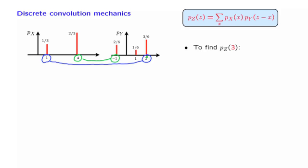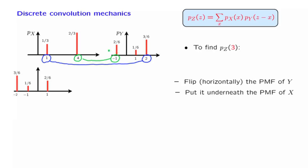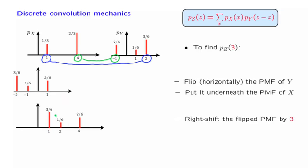So an alternative way of arranging the calculation is the following. Let us take the PMF of y, flip it along this vertical axis. So these two terms will go to the left side and this term will go to the right hand side. And then draw it underneath the PMF of x. This is what we obtain. Then let us take this drawing here and shift it to the right by 3. So the entry of minus 2 goes to 1, minus 1 goes to 2, and 1 goes to 4. So what have we accomplished by these two transformations?